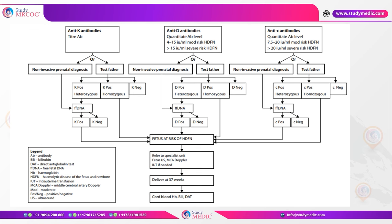In all such women, continue monitoring the fetus through scans, MCA Doppler, and intrauterine transfusion if the fetus develops hydrops or anemia. The aim should be delivery by 37 weeks, sending cord blood for hemoglobin, bilirubin, and direct antiglobulin test.